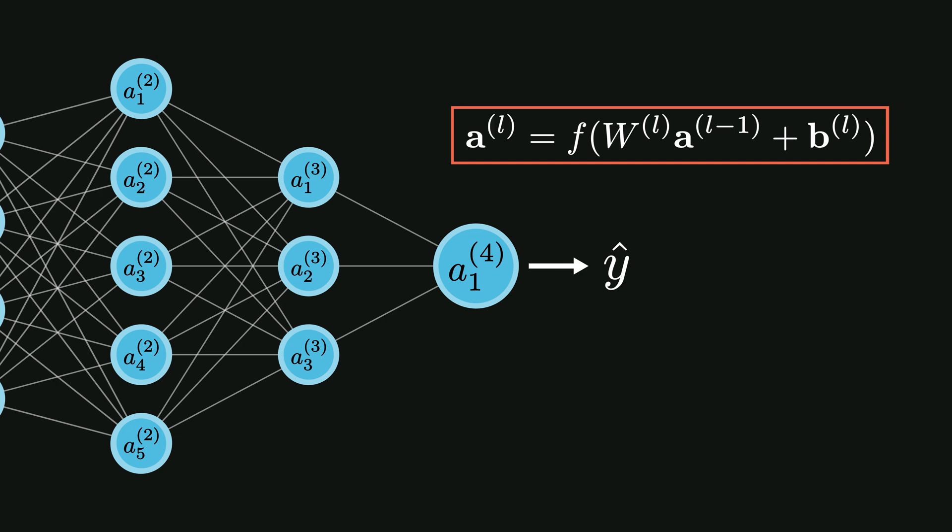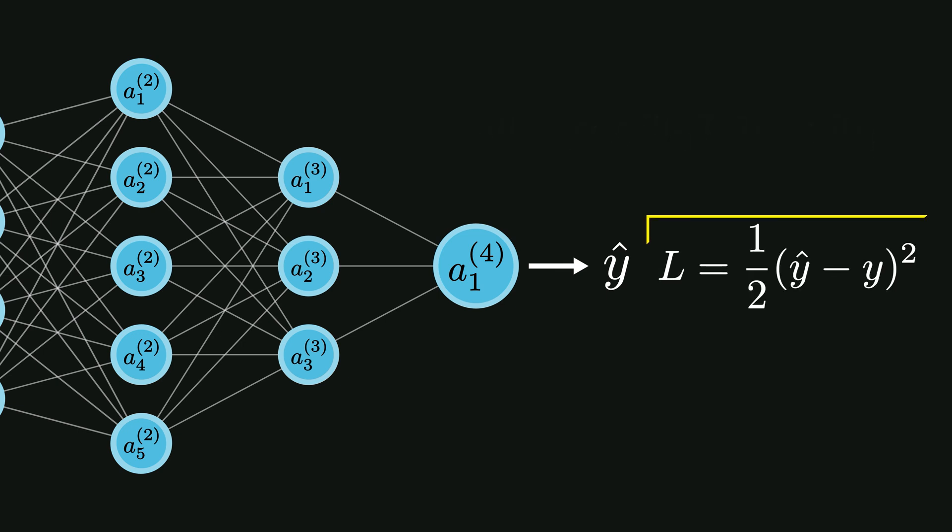After forward propagation, we calculate the error or loss. From here we update the weights and biases through backpropagation, right? No, the vanishing or exploding gradient problem occurs exactly at this step during backpropagation.